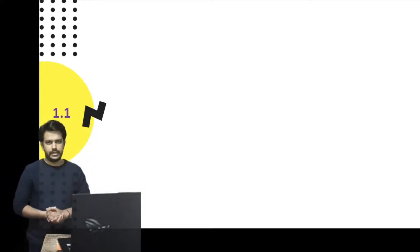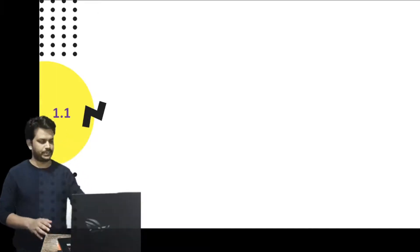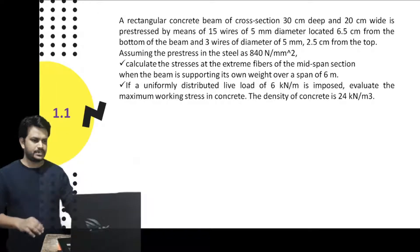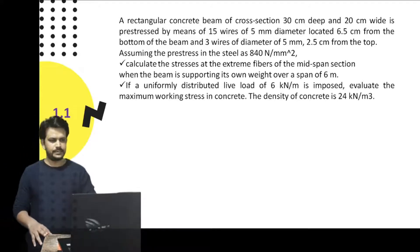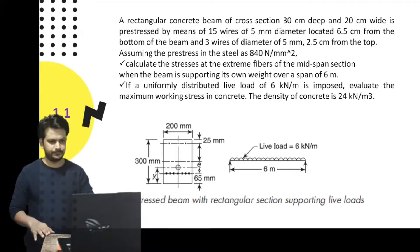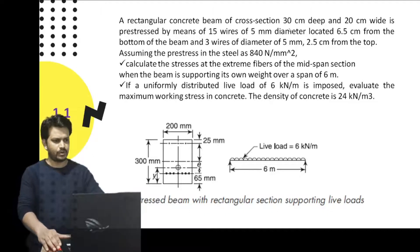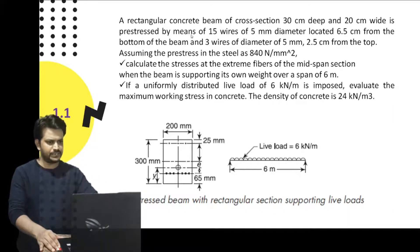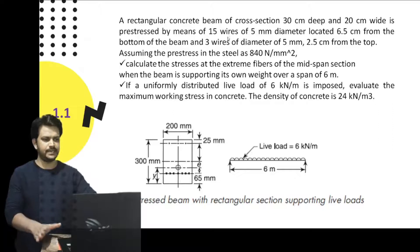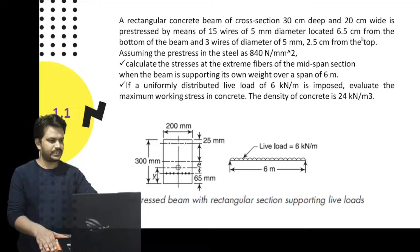Now let us deal with some numericals based on analysis of a pre-stressed cross-section. The first numerical: a rectangular concrete beam of cross-section 300 mm by 200 mm is pre-stressed by means of 15 wires of 5 mm diameter located at 65 mm from the bottom of the beam, and three wires of 5 mm diameter at 25 mm from the top.